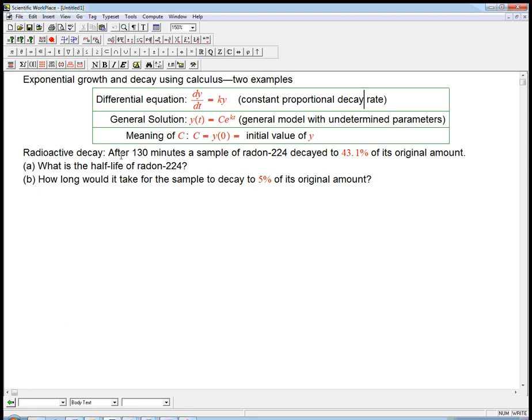So here's the situation. It's just slightly modified from a book problem. I changed the isotope. After 130 minutes, a sample of radon-224 decayed to 43.1% of its original amount. What's the half-life? That's the standard way of describing how fast one of these things decays, and how long would it take for a sample to decay down to 5%, quite a bit less.